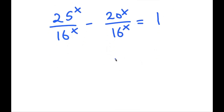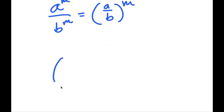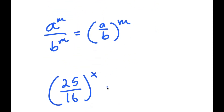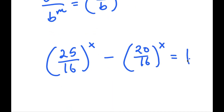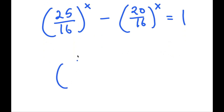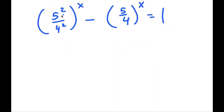From here, if I have something in the form a to the power of m over b to the power of m, this is equal to a over b to the power of m. So 25^x over 16^x turns into (25/16)^x, and 20^x over 16^x turns into (20/16)^x. Now 25 over 16 I'm going to rewrite as 5 squared over 4 squared, and 20 over 16 simplifies to 5 over 4.